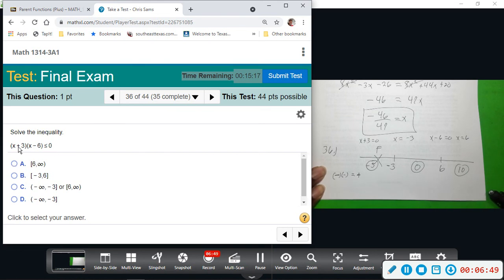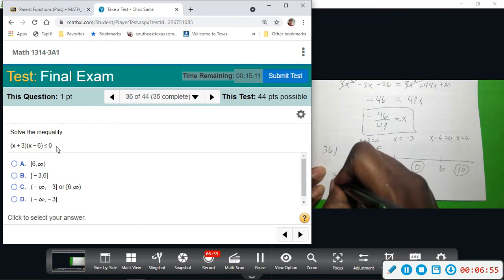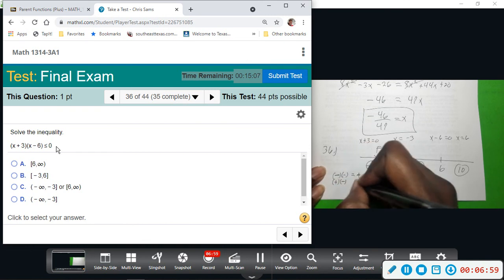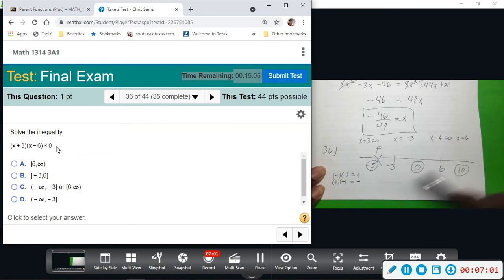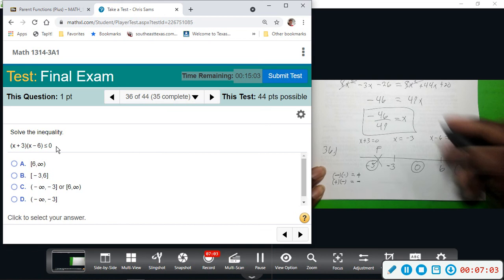If I were to plug in 0, that would give me positive. 0 would give me negative. So I'll get a positive in the first group, a negative in the second. So I'll multiply positive times a negative, that's a negative, and a negative number will be less than 0.